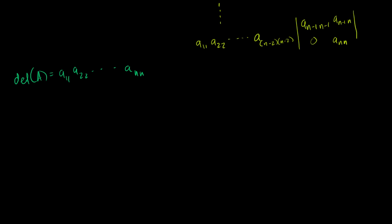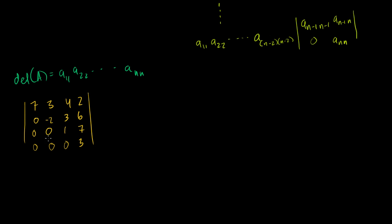Let me do a concrete example. Take the determinant of a 4×4 upper triangular matrix with diagonal entries 7, -2, 1, 3, and zeros below the diagonal (with arbitrary non-zero entries above). Since it's upper triangular, you just multiply the diagonal entries: 7 times -2 times 1 times 3. That's 7 times -6, which equals -42. And it's that easy.